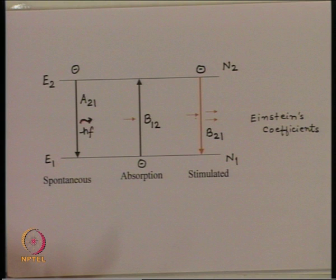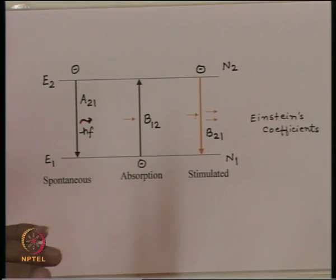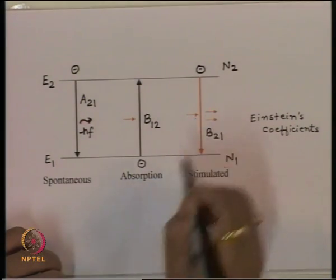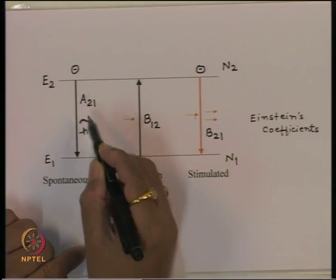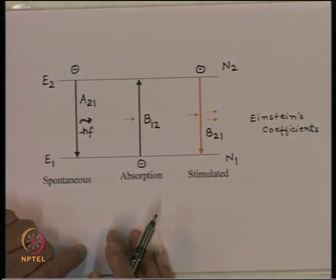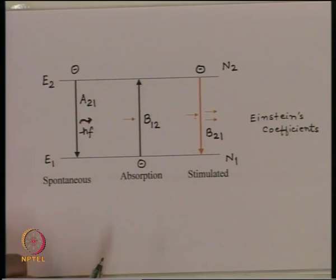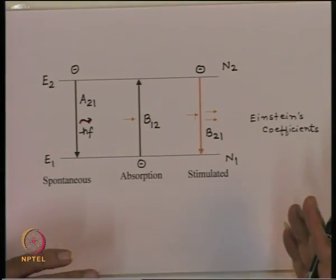The seed for the stimulated emission is internally generated due to spontaneous emission. Since this process is only an amplification process, the characteristics of the photon created by spontaneous emission are going to be reflected into the stimulated photons as well, because this process is creating more photons which have the same characteristics as the original photon.